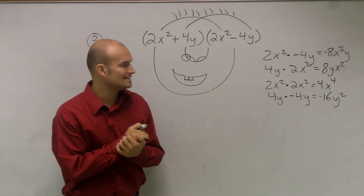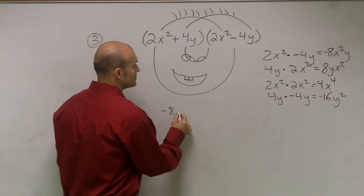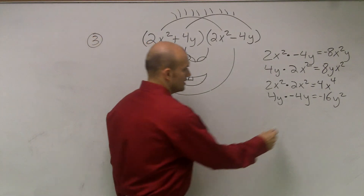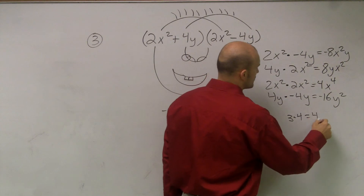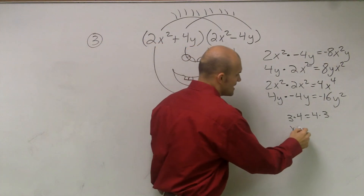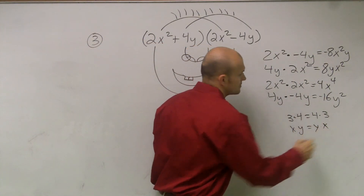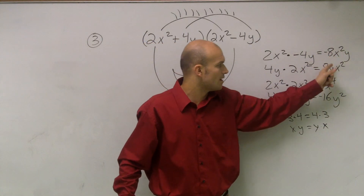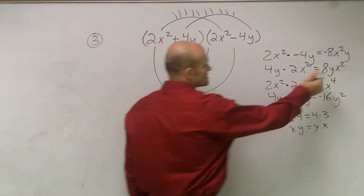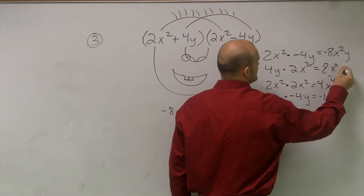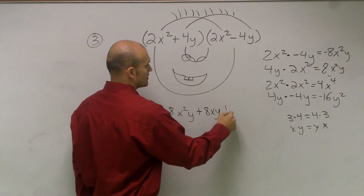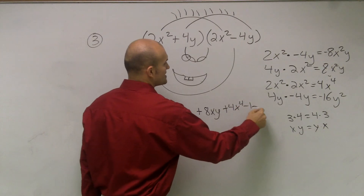So now I need to write out my answer: negative 8x²y. And one thing I need to look at, ladies and gentlemen, is 3 times 4 equal to 4 times 3? Yes, it is. So would x times y be the same thing as y times x? Yes. So can I rewrite x² times y as y times x²? Yes. So let's just rewrite them the same — instead of y times x², let's write this as x² times y, just so those look the same. Therefore I have: negative 8x²y plus 8x²y plus 4x⁴ minus 16y².